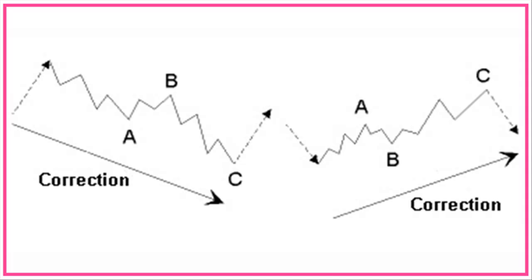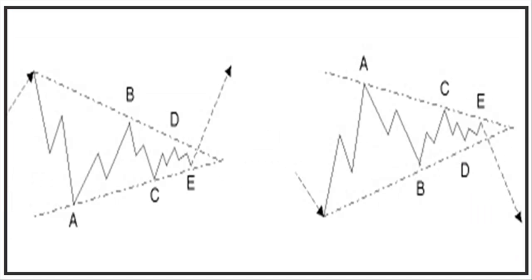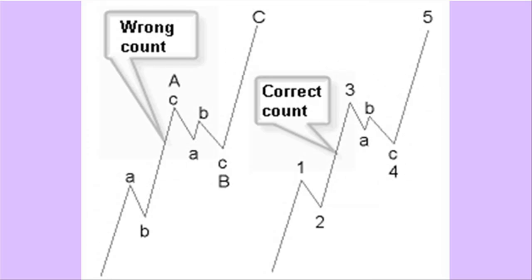Note that waves 2 and 4 in an impulse wave are also correction waves. Another possible correction pattern is a triangle correction. Here you can see a triangle correction in an up-trend and in a down-trend. A triangle correction consists of 5 correction waves. A triangle correction is always part of an ABC correction wave. Any impulse wave can be interpreted as a correction wave, but it is of course wrong to do this, because the Elliott Wave count will be completely wrong.